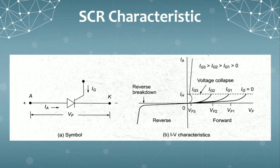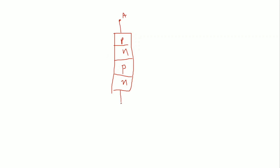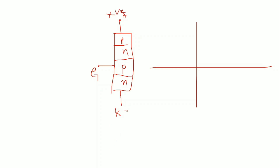Let us see the characteristics of SCR. Coming to the SCR characteristic, here you can see the symbol of SCR and this is the characteristic. I will take the layers: PN, PN. We know that this P is connected to anode, this N is connected to cathode, and this P is connected to gate. Now I will connect this anode to positive voltage and cathode to negative voltage — this is forward bias.